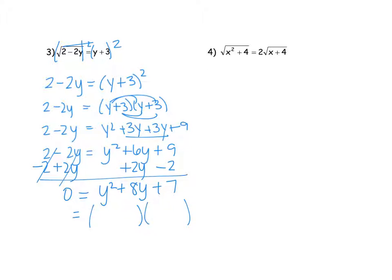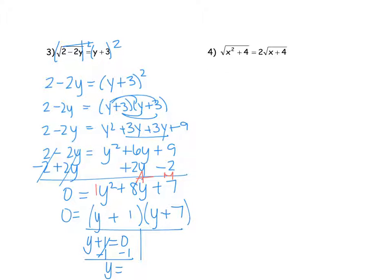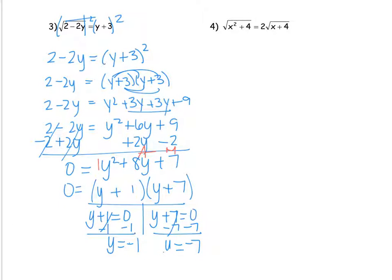We're going to factor this using the multiply-add method because the leading coefficient is 1. What numbers multiply to 7 that add to 8? Simply 7 and 1. So y plus 1 and y plus 7. When we do a t-chart, y plus 1 equals 0 gives y equals negative 1, and y plus 7 equals 0 gives y equals negative 7. So those are my two potential answers.